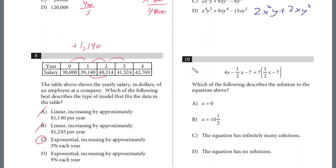Let's take a look at question 10. Which of the following describes the solution to the equation above? First, let's combine. We have 4x minus 1½x, so that's going to be 3½x minus 7. Here we'll distribute the 7. 7 times 1½, that's 7½, that's also 3½x minus 49.